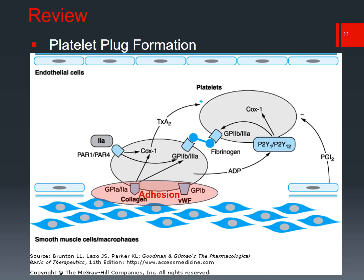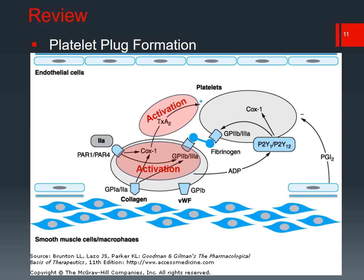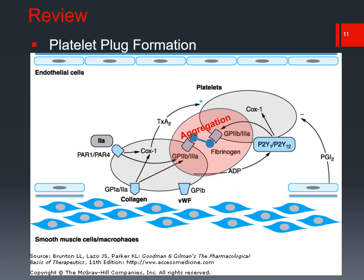To summarize: adhesion promotes activation; activation of neighboring platelets occurs through thromboxane A2; release of ADP further activates neighboring platelets via ADP receptors; activation causes conformational change expressing GP2B3A receptors; once both platelets are active, they aggregate via GP2B3A receptors — in this case using fibrinogen, though von Willebrand factor can also be used for aggregation.